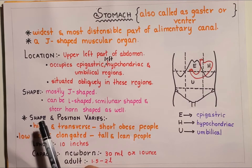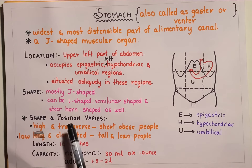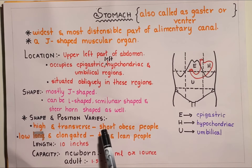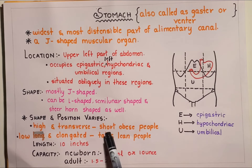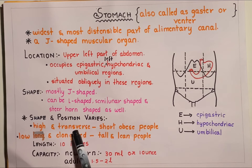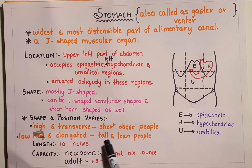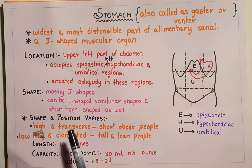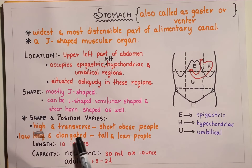The shape and position of the stomach may vary. For example, in short and obese people the position of the stomach is high and transverse, whereas in tall and lean people the position of the stomach is low and elongated.